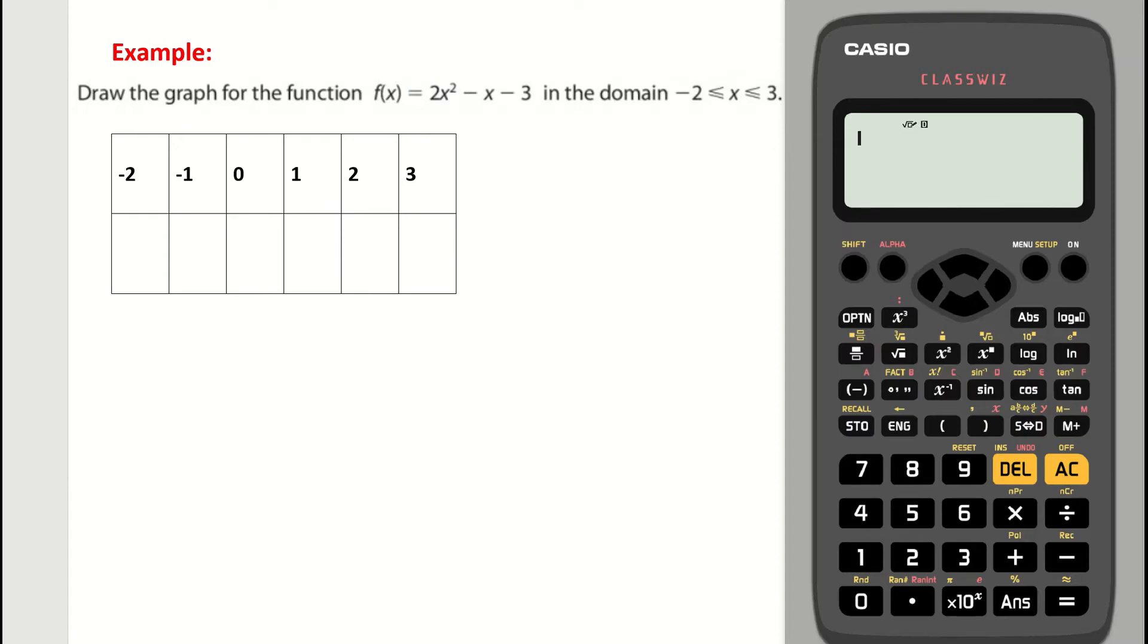So in our example, it wants us to draw the graph for the function f(x) = 2x² - x - 3 in the domain -2 to 3. The domain is basically the values for my x, my inputs.